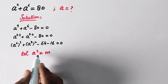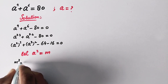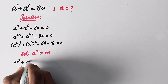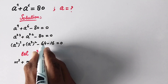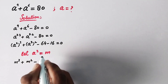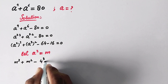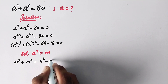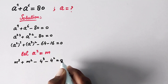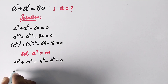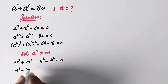By substituting A cubed as M, we write M raised to the power 3 plus M squared. This 64 is equal to 4 raised to the power 3, and minus 16 is equal to 4 squared, equal to 0. So we will write M cubed plus M squared minus 4 cubed plus 4 squared equal to 0, which we can rearrange as M cubed minus 4 cubed, and M squared minus 4 squared.